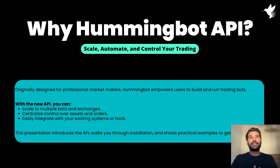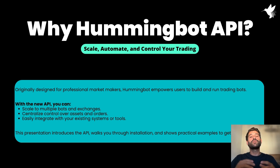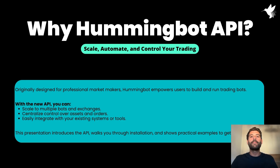That was very nice, but the main problem that we have been discussing with some market makers and individuals using our product is how you can scale the operations. That was not an easy task because they would need to run a Docker container or have a Kubernetes setup to deploy multiple Hammingbots. If they are managing multiple accounts, they need to control the credentials and hashes for these accounts. So all that was really complex, and that's exactly why we created Hammingbot API.